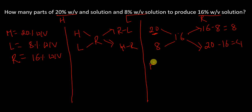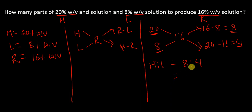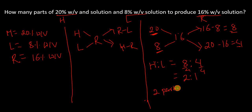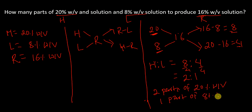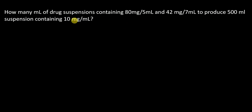The ratio of higher concentration to lower concentration is 8 is to 4. Dividing both sides by 4 gives 2 is to 1. So to produce a 16% w/v solution, we need two parts of 20% w/v solution and one part of 8% w/v solution.